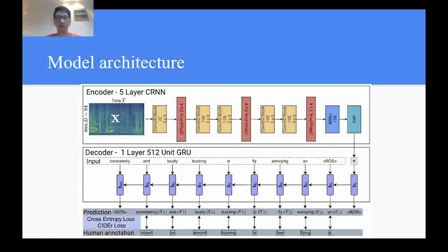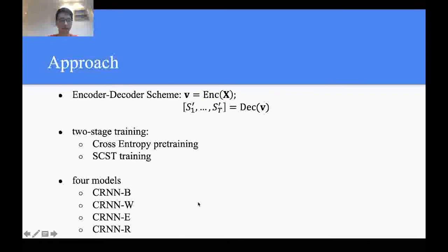The decoder is just a standard GRU decoder, which takes the previous word embedding as the input, and outputs the word probability of this time step. The whole model is trained end-to-end according to the loss between the predicted sentence and the ground truth caption. According to different training methods, the loss may be cross-entropy loss or CIDEr loss. This is just our encoder-decoder scheme.